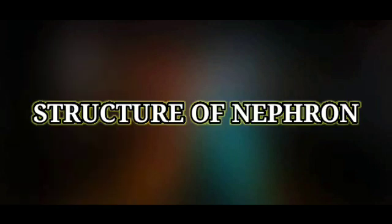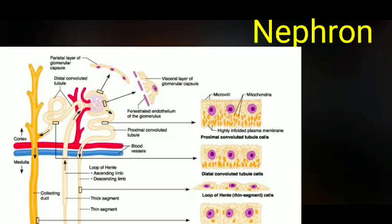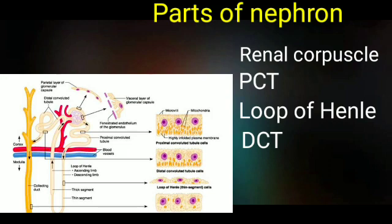Before going to the histological features of the kidney, we need to learn in detail about the structure of nephrons. Nephrons are considered the structural and functional unit of the kidney, and each kidney contains about 1 to 4 million nephrons. Each nephron consists of renal corpuscles, proximal convoluted tubules, loop of Henle, and distal convoluted tubules. Each part of the nephron shows different cellular architecture.